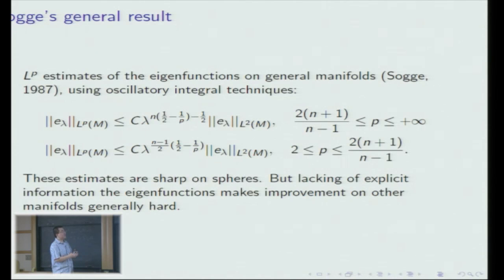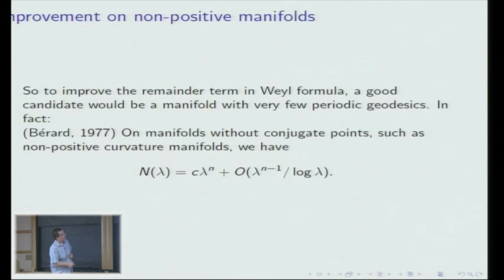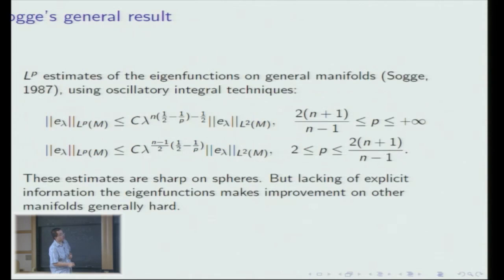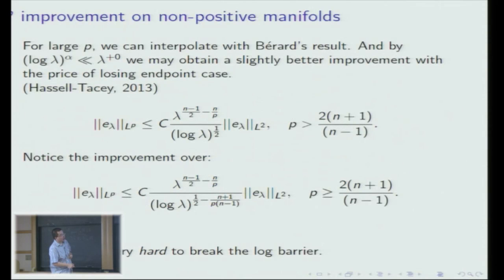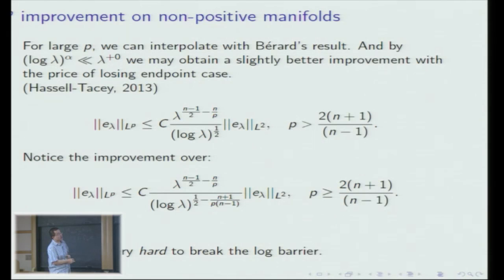On manifolds with non-positive curvature, we can interpret Sogge's estimates with Bérard's result — Bérard's result is just an L-infinity type estimate. We can have trivial estimates when p is large, but we are interested in non-trivial results. Hassell-Sogge proved that you can actually have a very small improvement, and not surprisingly they use the property that log λ is comparably smaller than any positive power of λ. By manipulating the half-wave operator they can prove this, with the price of losing the endpoint case — very typical in harmonic analysis.